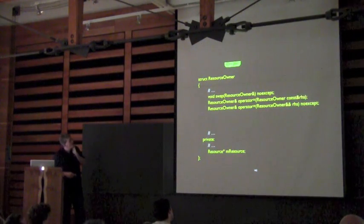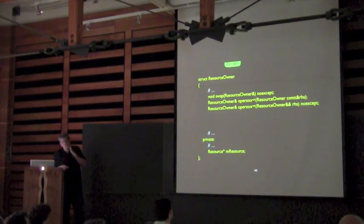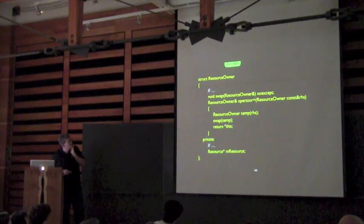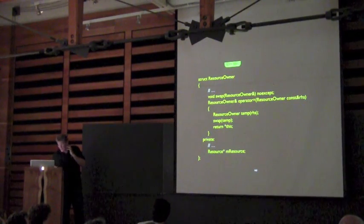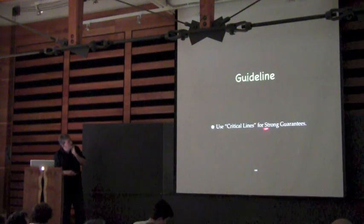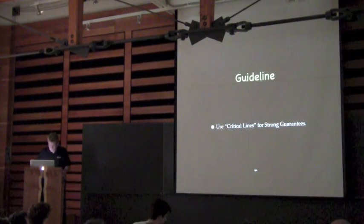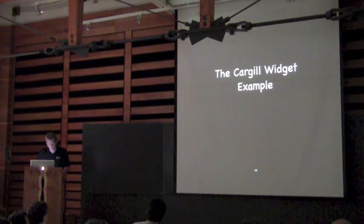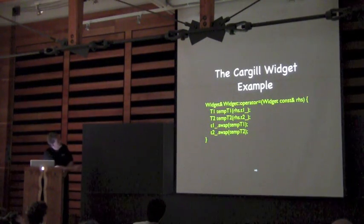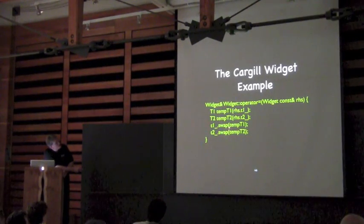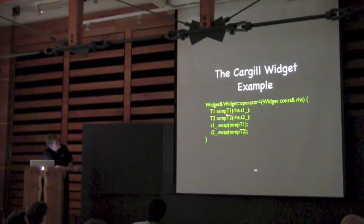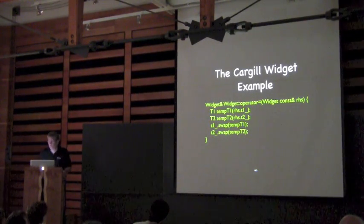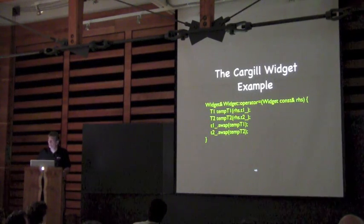So the guideline is: use the critical line for the strong guarantee — when you want to do the strong guarantee. Now I want to revisit Cargill. Remember the problem: a widget with two data members, each wanting a strong assignment operator. This works — the cheating is that I'm making the assumption that I have a swap operator. I make some temporaries, then I swap. And so this gives us a strong guarantee for an object that has two data members. I did all the things that could throw first, then I fixed it up.